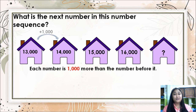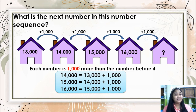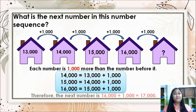So: 14,000 = 13,000 + 1,000. 15,000 = 14,000 + 1,000. 16,000 = 15,000 + 1,000. Therefore, the next number is 16,000 + 1,000 = 17,000.